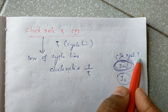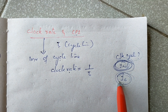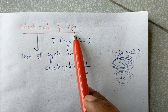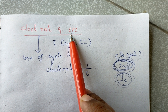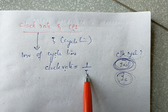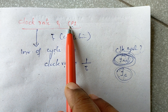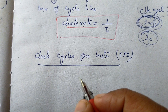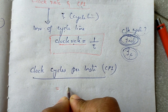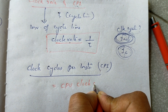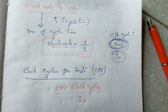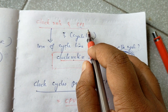We can calculate how many instructions are executed. Clock cycle equals instruction count multiplied by CPI. Clock rate is calculated by 1 divided by cycle time. Clock cycles per instruction — if we calculate the clock cycle and instruction count, we can calculate the CPI. CPI equals CPU clock cycles for a program divided by instruction count.